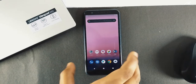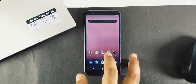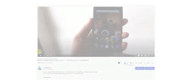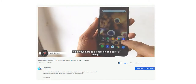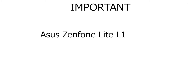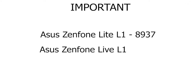First, this video is only for those who have not unlocked their device. If you have unlocked the device, you can watch this video and easily downgrade to Oreo, no issues. Before going to the content, I should mention that if you have the Asus Zenfone Lite L1, you should only download builds which start with 8937 or contain 8937. If you have the Live L1, then you have to download and install only 8917 builds.